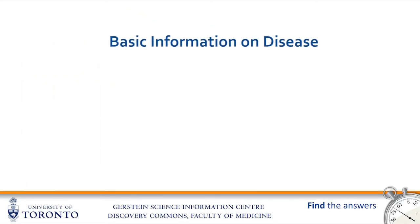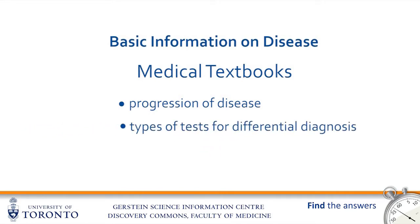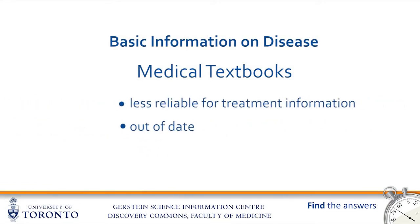For basic information on disease, such as the natural progression of disease, common causes, and tests, current medical textbooks are the place to look. Here you can find information on the progression of disease and the types of tests that can be used for differential diagnosis. Medical textbooks are less appropriate for information on the most recent clinical evidence relating to disease, because they're always slightly out of date and may lack the very latest studies.